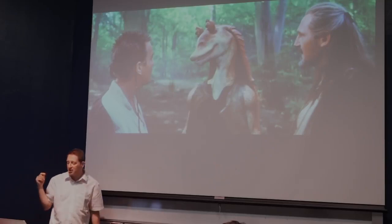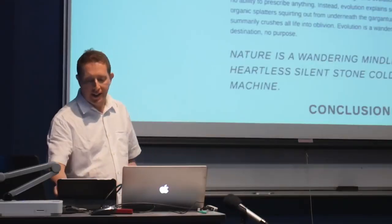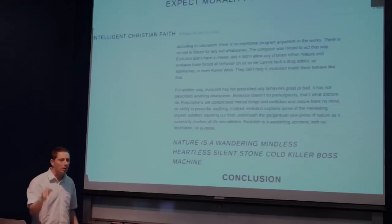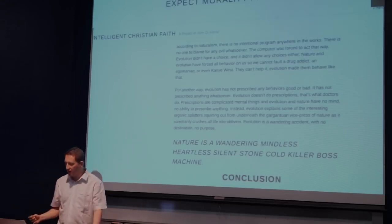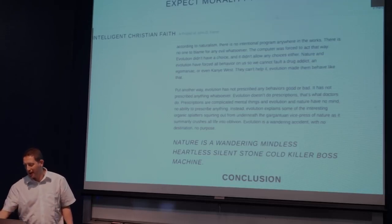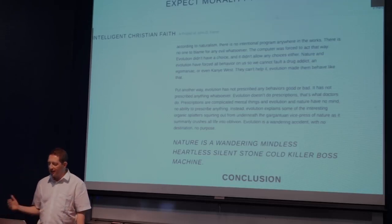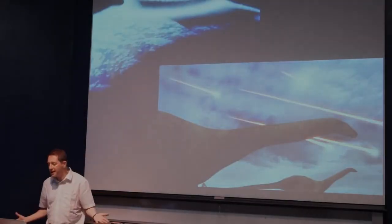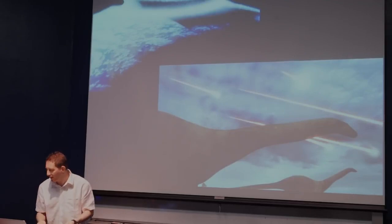A further problem is that science has shown us that we got here by a process of evolution. Evolution is cruel and nasty. As John has said on his blog, nature is a wandering, mindless, heartless, silent, stone-cold killer boss machine. Nature is a jerk. But according to Christianity, God is the author of nature. So what does that make him? And if catastrophic events like the impact that probably killed off the dinosaurs didn't happen, we most likely probably wouldn't be here. And this awful violence is the very engine of our creation.